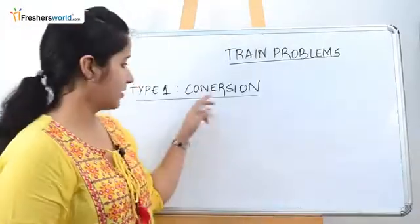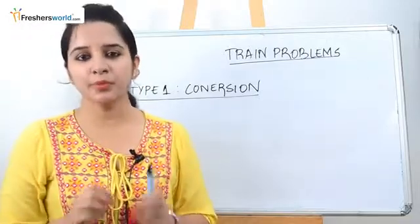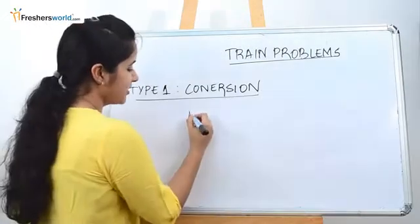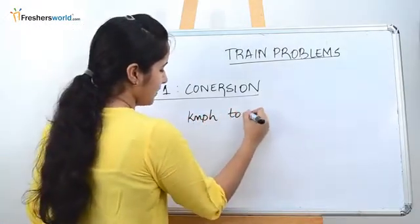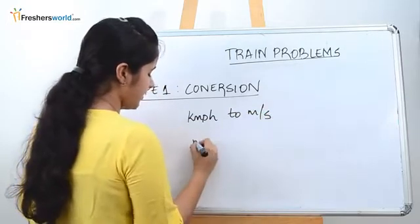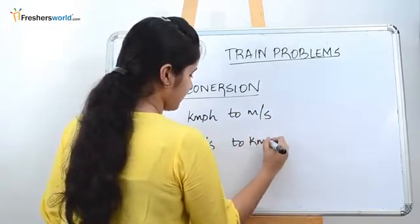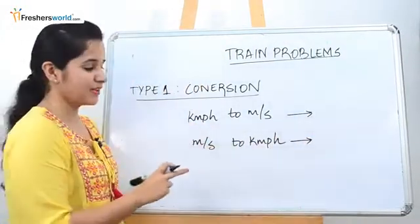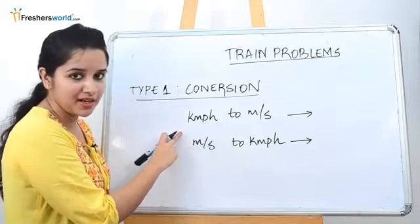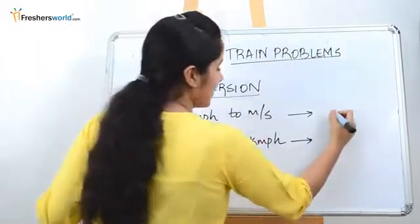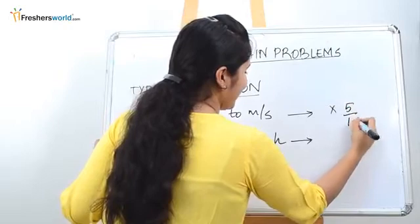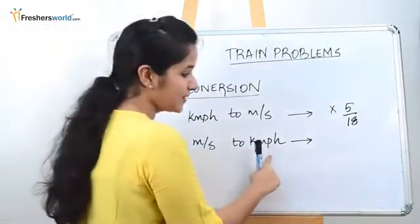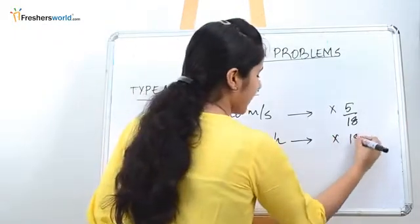Type 1 problem is conversion. Conversion is a very simple problem that you may face in any exam. The conversion types are kilometers per hour to meters per second, or meters per second to kilometers per hour. When the question requires you to convert from kilometers per hour to meters per second, always multiply by 5/18. When the question says convert from meters per second to kilometers per hour, multiply by 18/5.